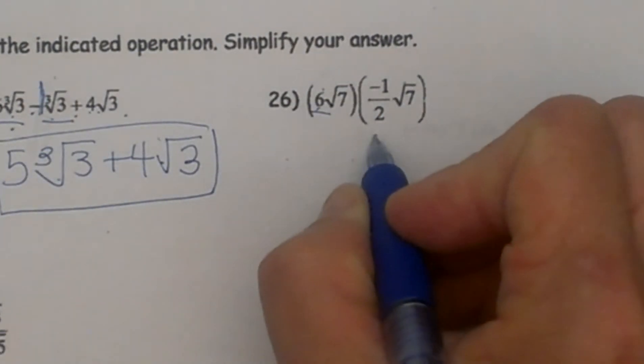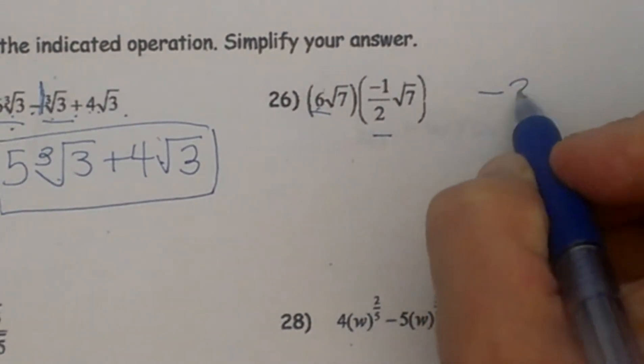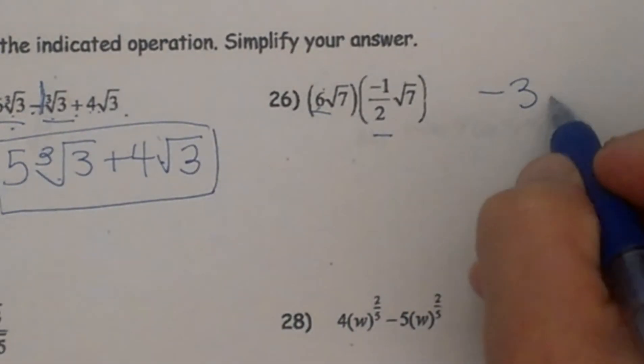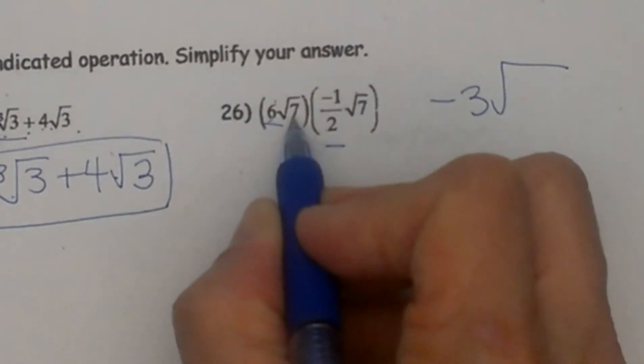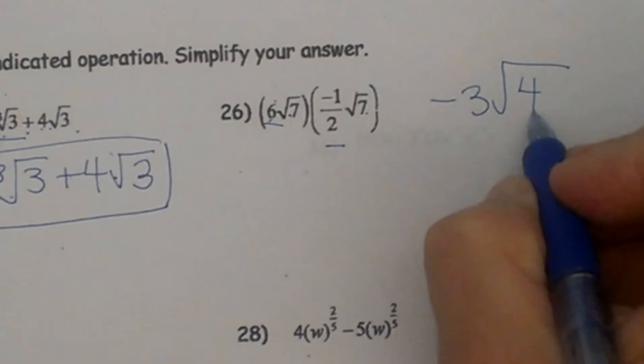So 6 times negative a half, half of 6 is 3 and it is negative, so negative 3. And then I have the square root of, well let's multiply these, 7 times 7 which is 49.